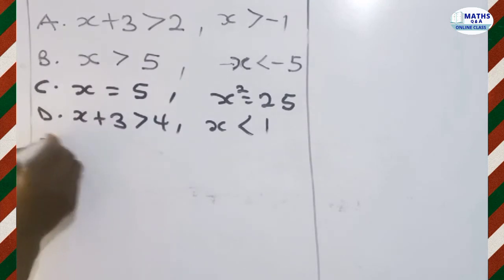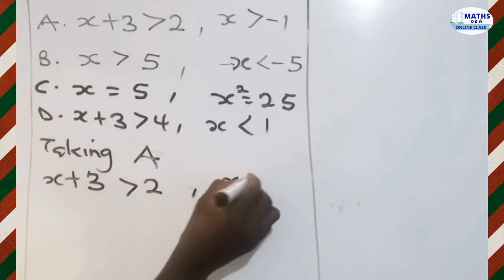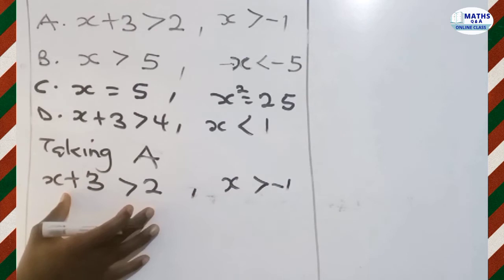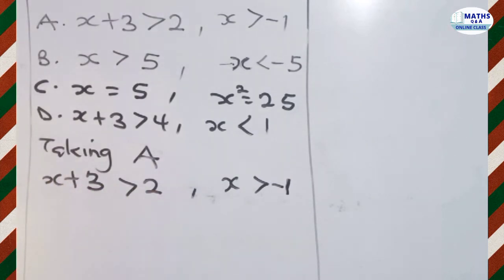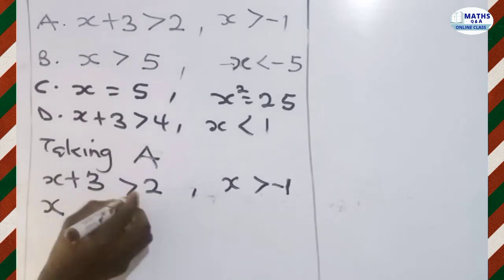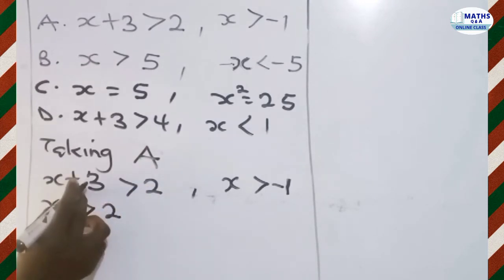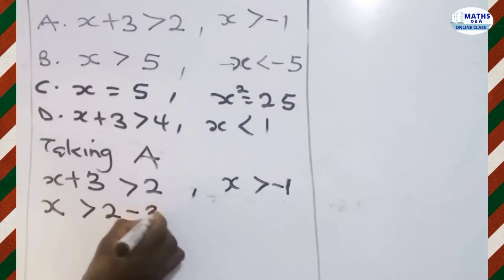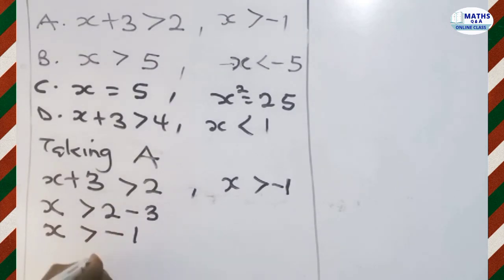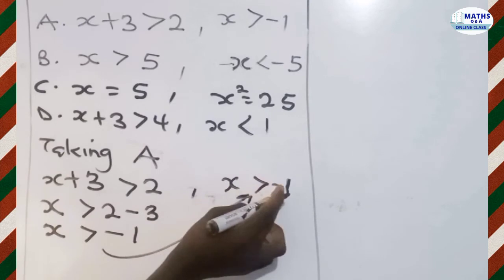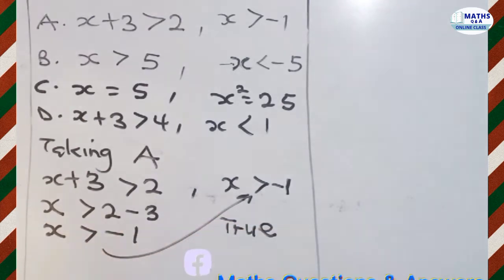Taking option A, we have X plus 3 greater than 2, and we are told that X is greater than negative 1. We solve for X in this inequality and compare. We group like terms — we have only one X, so we write X, bring our inequality sign, and send the constant 3 to the other side. Since 3 is positive, it becomes negative 3. So X is greater than 2 minus 3, which gives us negative 1. Comparing: we were told X is greater than negative 1, and our result is also X greater than negative 1. So this statement is true.